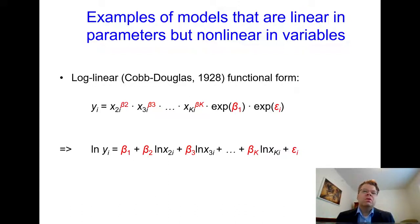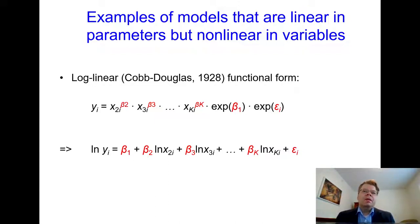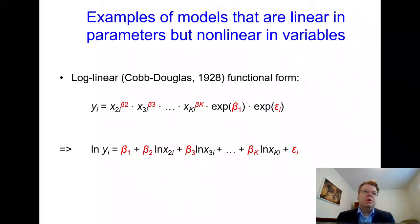We take logarithms of all variables. Notice two things. First, in the original equation — when expressed in original units rather than logarithms — the error term epsilon enters the model in a multiplicative fashion. This means epsilon has a different effect depending on how large the x variables are. This multiplicative formulation is often used when there is heteroscedasticity with respect to size: if the variance of the y variable increases with size, this formulation can account for that. We will talk about heteroscedasticity later in the course.